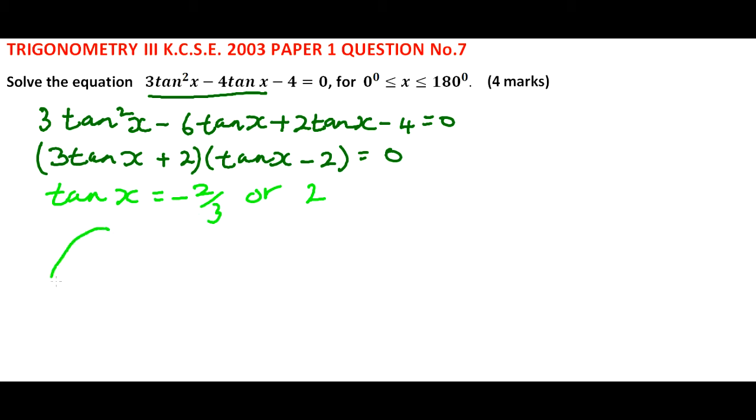Using the unit circle, we can identify the quadrants. Here we have sine, tangent, and cosine.